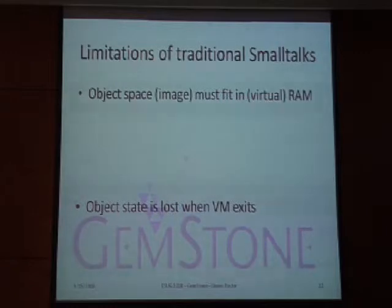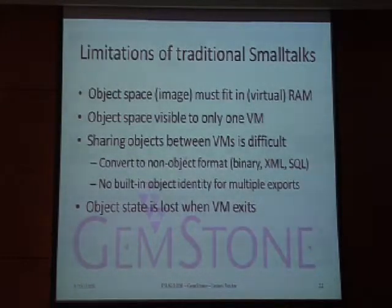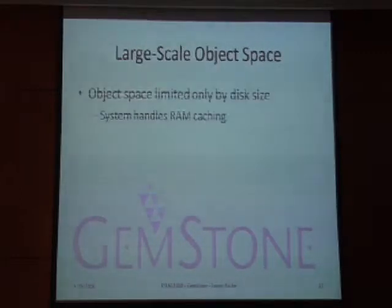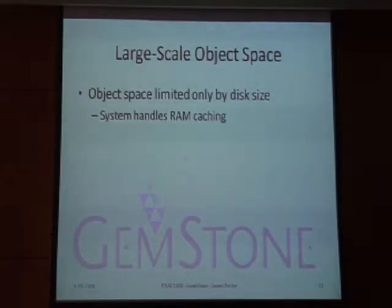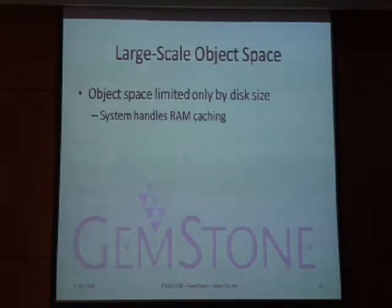To recap the limitations of traditional Smalltalk that GemStone avoids: the image must fit in RAM, the visible object space is visible to only one VM, sharing objects is difficult, there's no built-in identity for multiple export/import cycles, and object state is lost when you exit the VM. GemStone handles caching into RAM — following what most database systems do, it caches recently used portions of the database into RAM and shares that across multiple VMs. So if an object you want isn't in your local VM but was read recently by another VM, you can access it through RAM quickly.